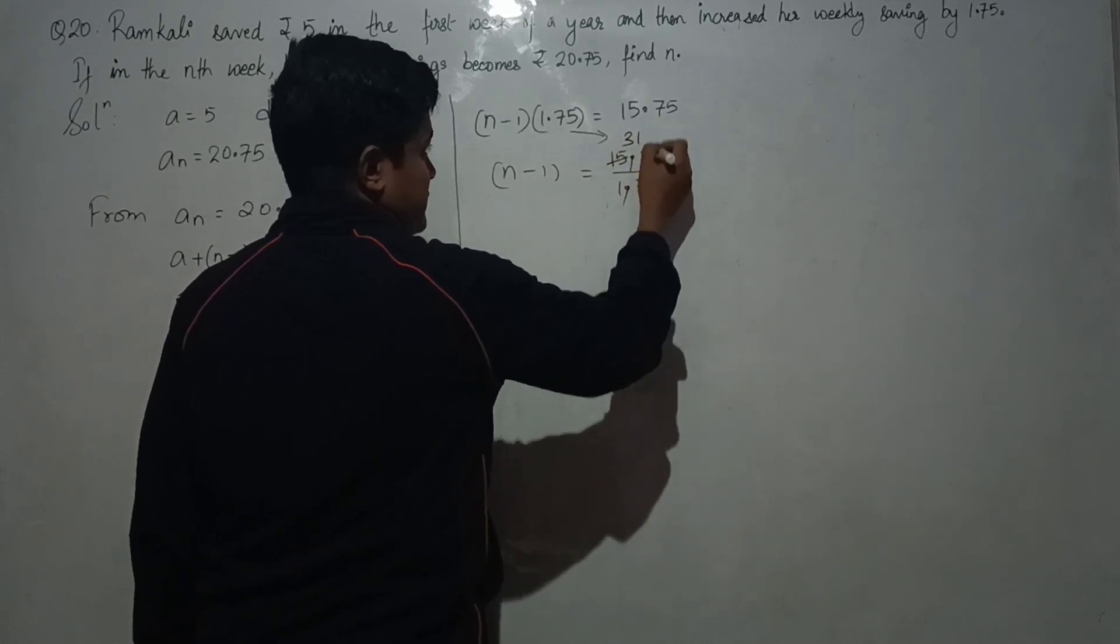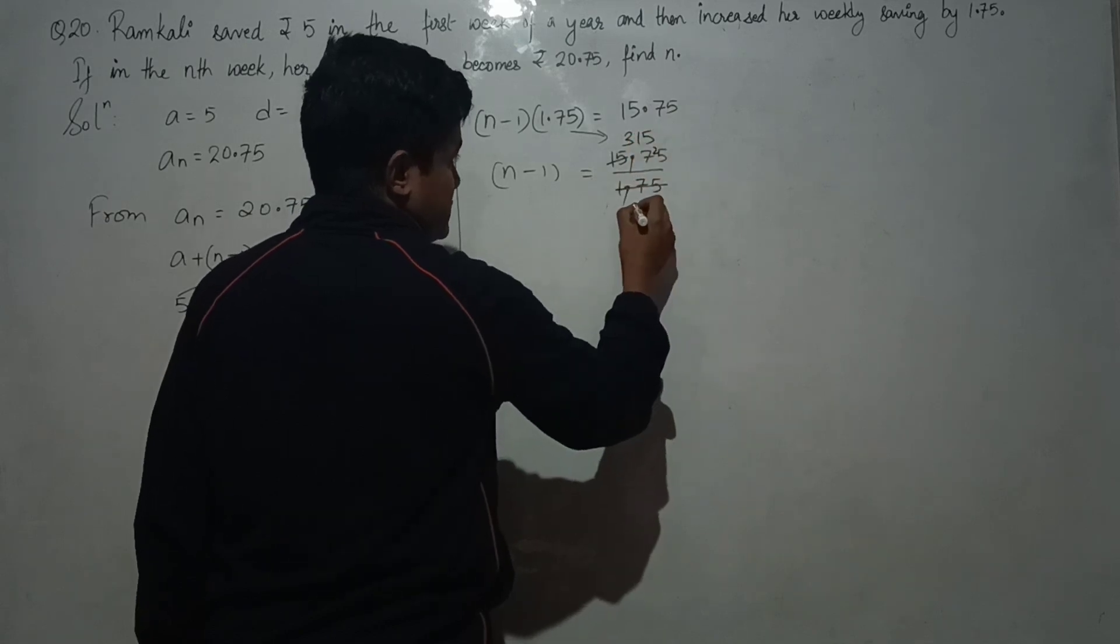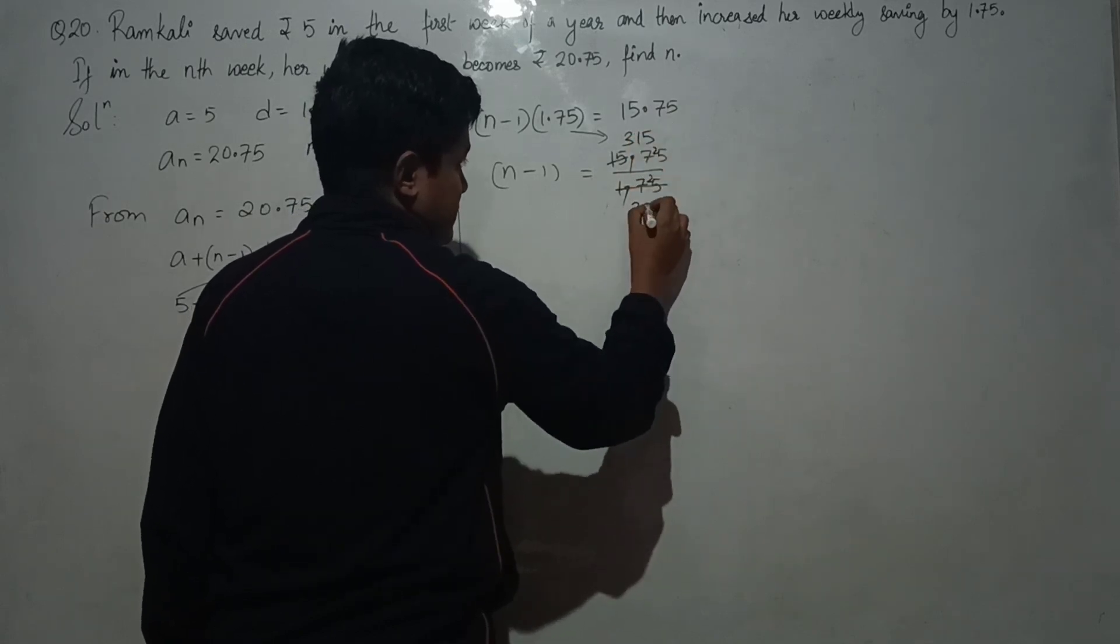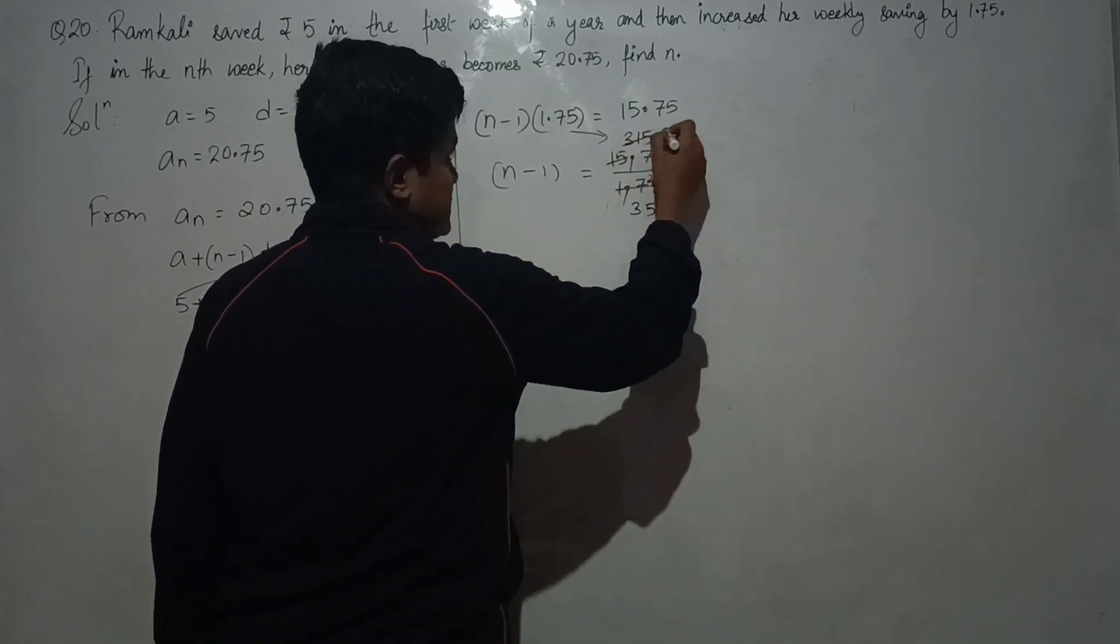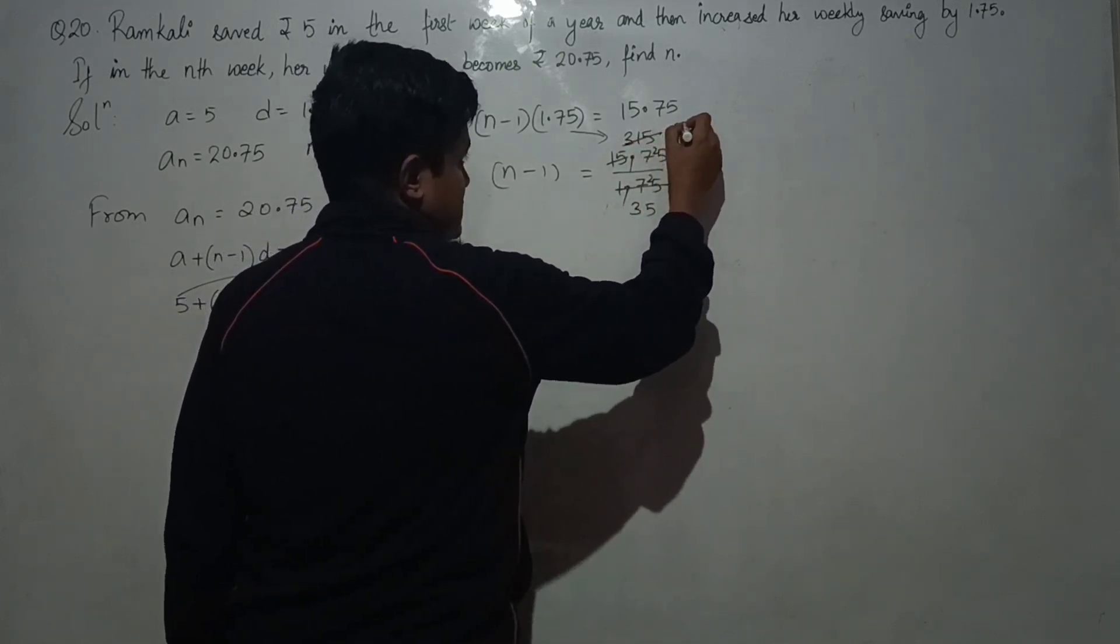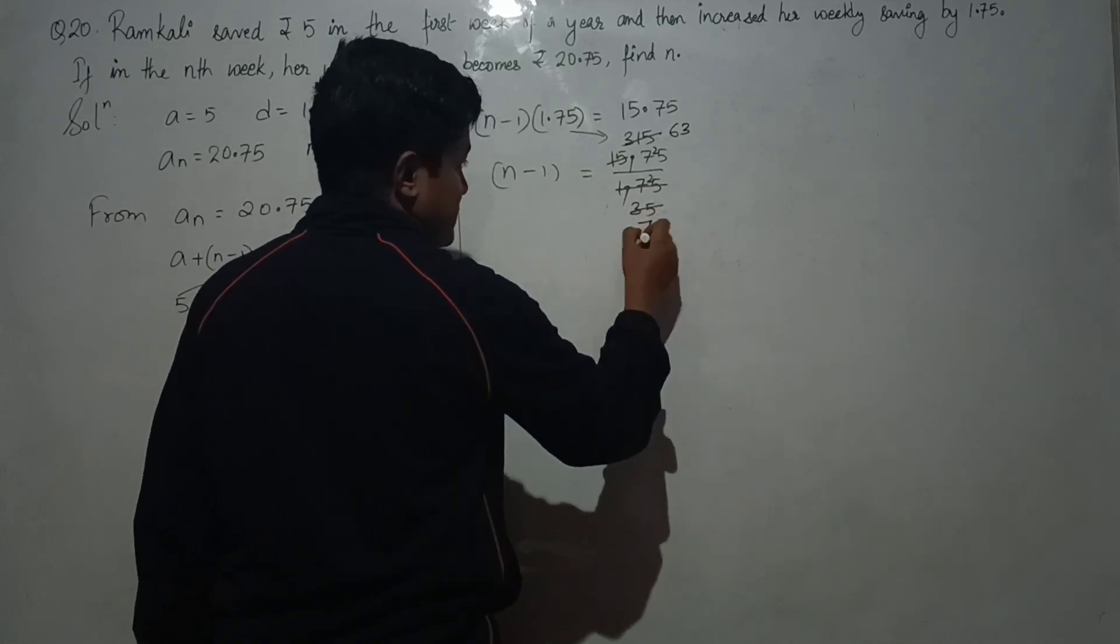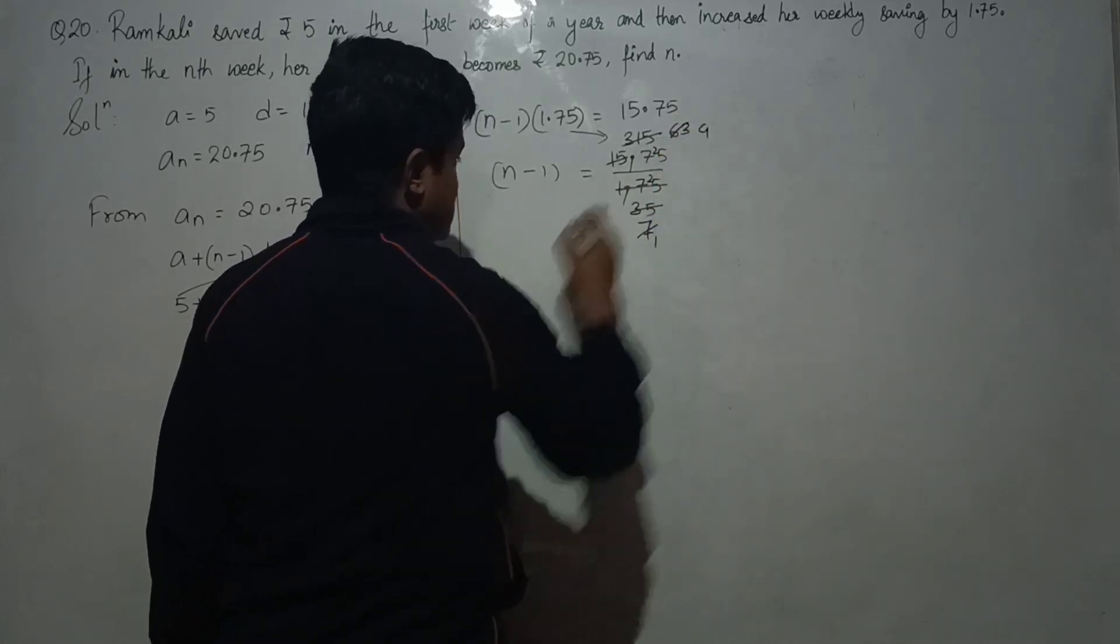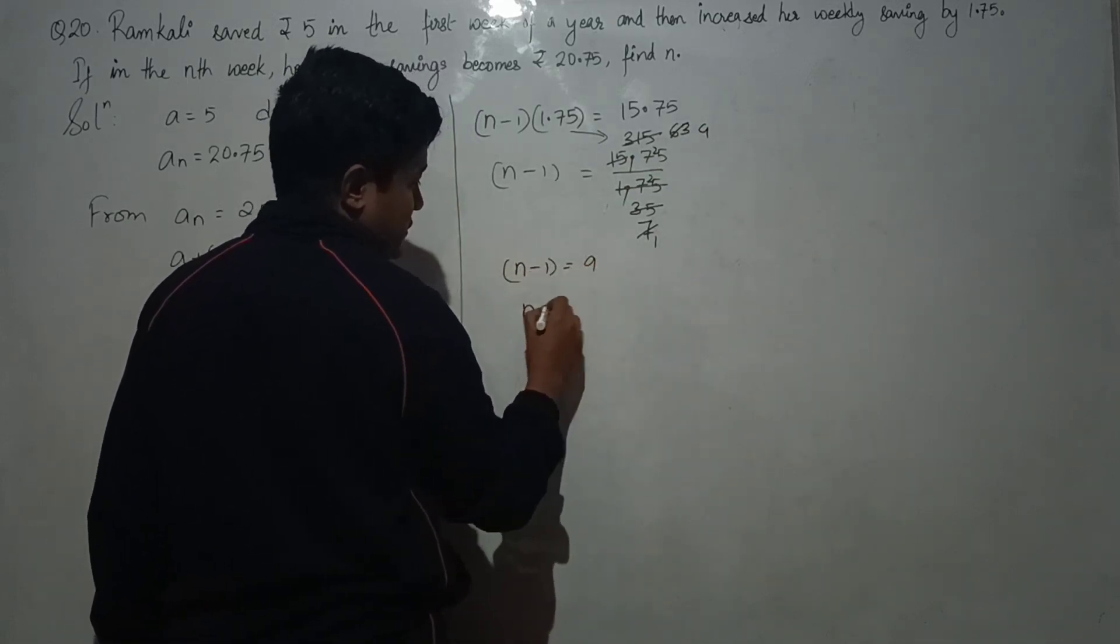Performing the division: 1575 divided by 175. Five threes are fifteen, five ones are five... We get (n minus 1) equals 9.